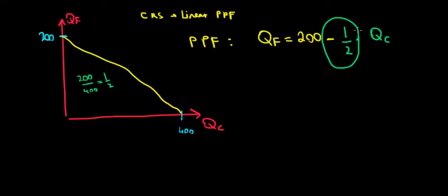The one-half represents the opportunity cost: if we want to produce one more unit of clothing, we must give up half a unit of food. The intercepts show how much we can produce if we employ all capital and labor in their respective industries. That's the production possibilities frontier, and we are done with this question.